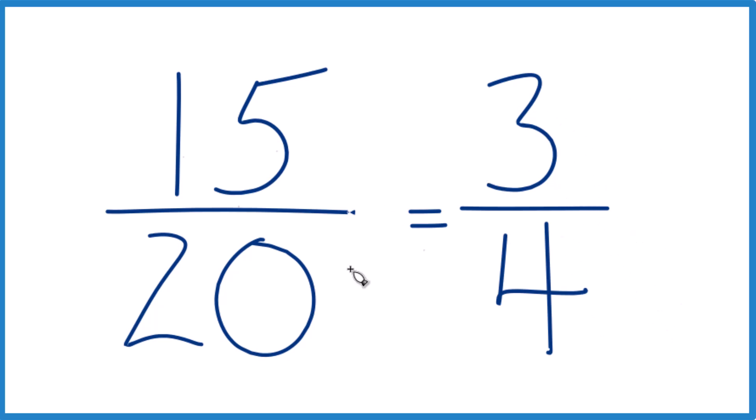That's how you simplify or reduce 15/20 to lowest terms. It's important to understand these have the same value. They're what we call equivalent fractions.